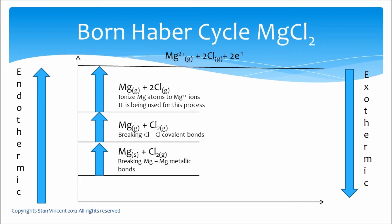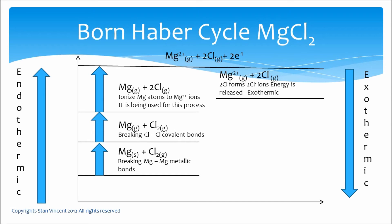Chlorine has 17 electrons; by gaining one more electron it becomes more stable, forming a chloride ion with the same electronic configuration as argon, a stable noble gas. Similarly, magnesium changed into Mg²⁺ by losing 2 electrons, giving it the configuration of neon. The energy released in forming the chloride ions is the electron affinity, and this energy change is represented on the graph.